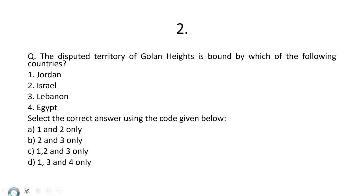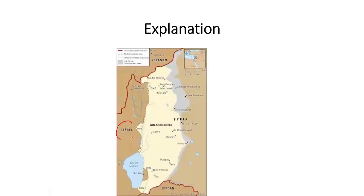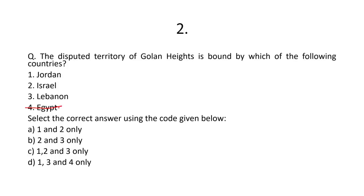Question No. 2. The disputed territory of Golan Heights is bound by which of the following countries? Let's look at the map. Israel, Lebanon, Jordan. Egypt is not part of it. So 1, 2, 3. C is the correct answer.